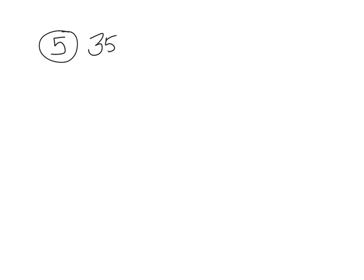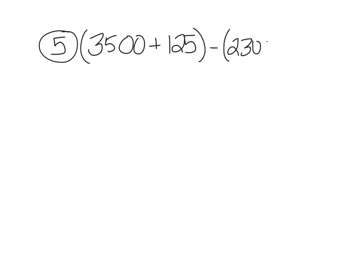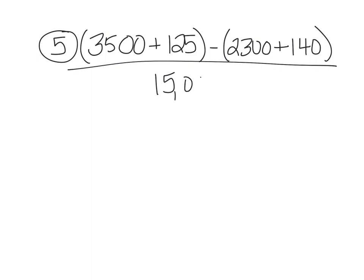Number five is the long one with migration. We're going to take 3,500 births plus immigrants, minus — in parentheses — deaths of 2,300 plus emigrants with an E, over our total population, times 100. Pause the video and do this calculation with your calculator.